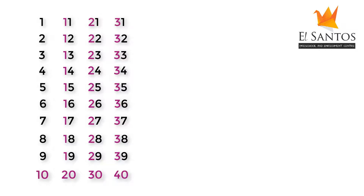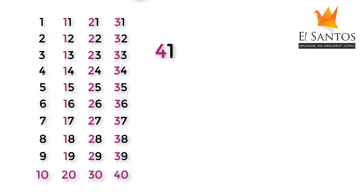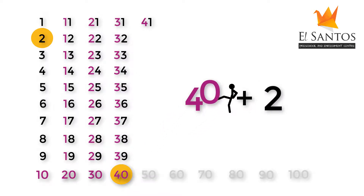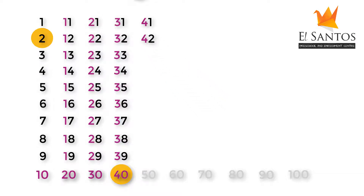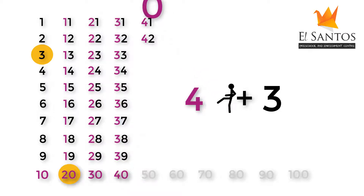41 is made from 40 and 1 — 41. 42 is made from 40 and 2 — 42. 43 is made from 40 and 3 — 43.